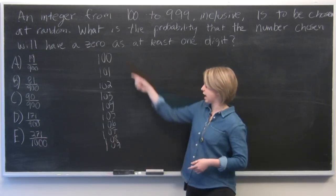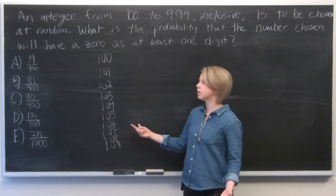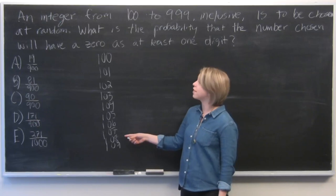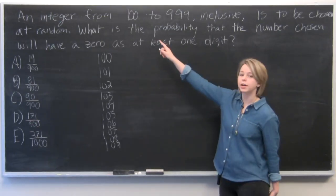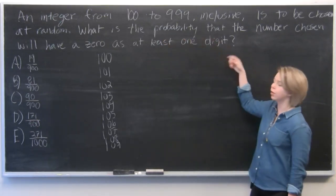So all 10 of these numbers obviously include a zero, and they will for each of 100, 200, 300, all the way to 900.